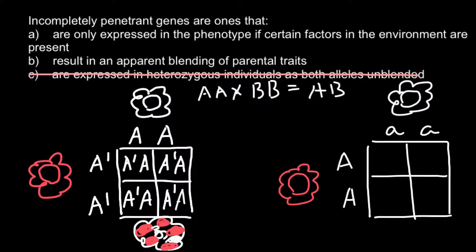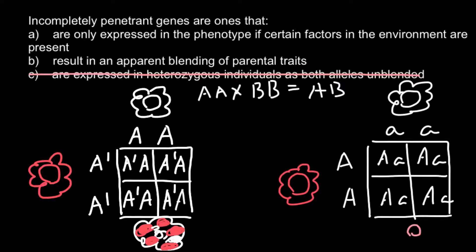Answer B describes a classical example of incomplete dominance. All the progeny would be capital A and small-a. Because the dominant allele A is incompletely dominant over the recessive allele, 100% of the progeny from such a cross would be an intermediate color — all the flowers would be pink, because one dominant allele is not enough to produce enough pigment for the flowers to be red.